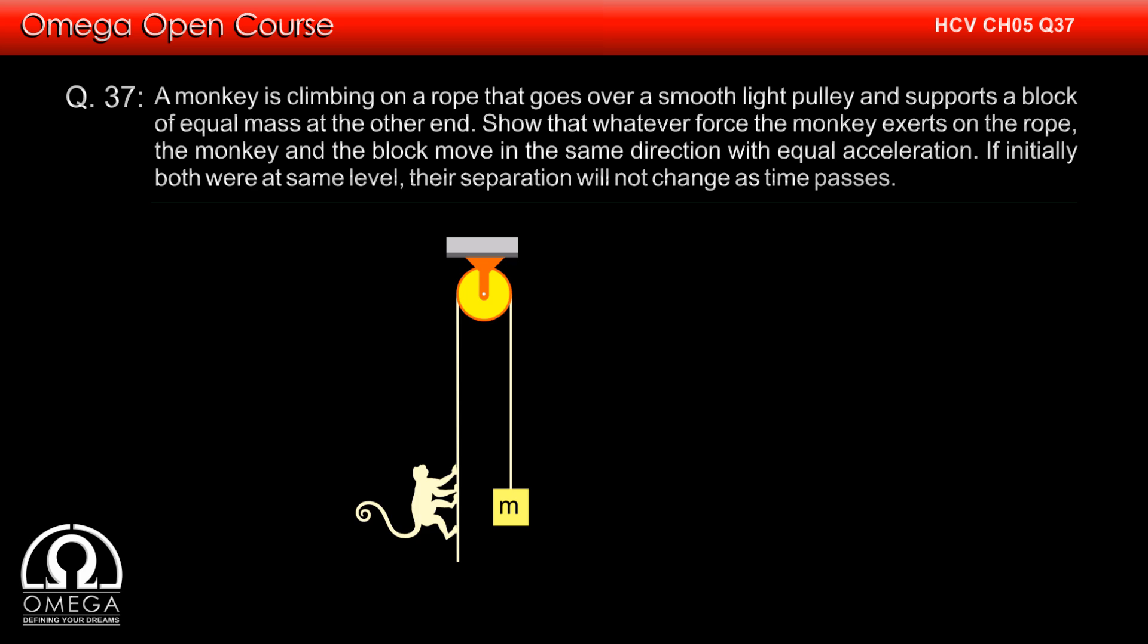A monkey is climbing on a rope that goes over a smooth light pulley and supports a block of equal mass at the other end. Whatever force the monkey exerts on the rope, the monkey and the block move in the same direction with equal acceleration. If initially both were at same level, their separation will not change as time passes.